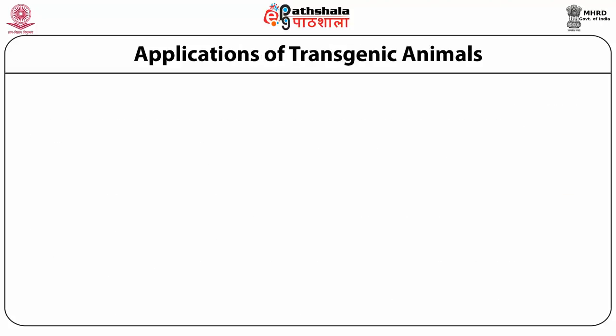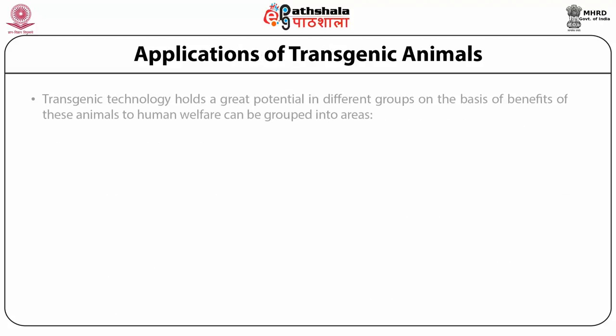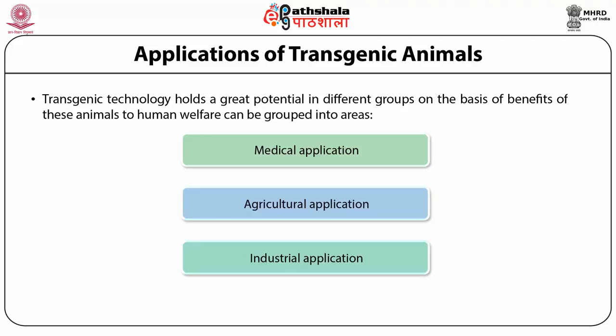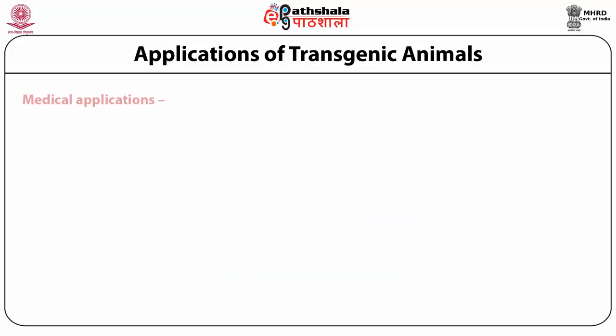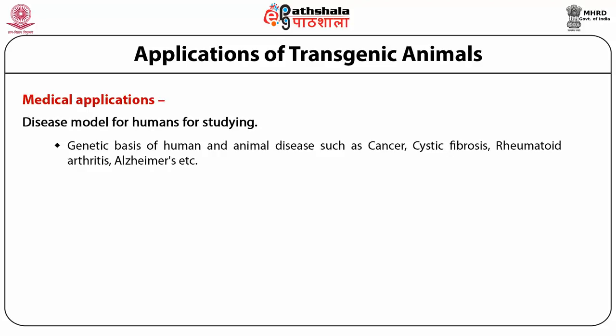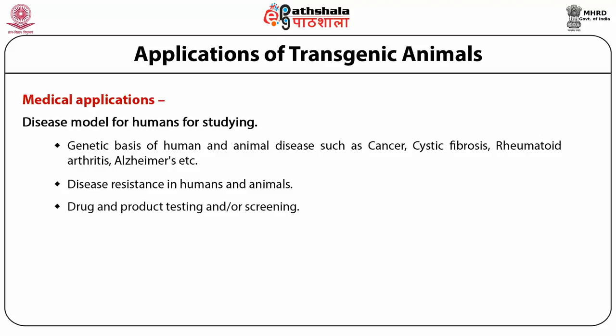Application of transgenic animals: transgenic technology holds great potential benefiting animal and human welfare across medical, agriculture, and industrial fields. In the medical field, transgenic animals are used as disease models for humans to study the genetic basis of diseases such as cancer, cystic fibrosis, and Alzheimer's disease. They are used for disease resistance in humans and animals, for production and testing of drugs.